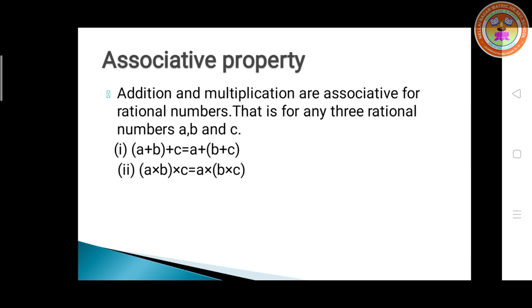That is, associative property. Addition and multiplication are associative for rational numbers. That is, for any three rational numbers A, B and C, the first statement is (A plus B) plus C is equal to A plus (B plus C). The first one is for addition. Now we'll see for multiplication: A into (B into C) is equal to (A into B) into C.